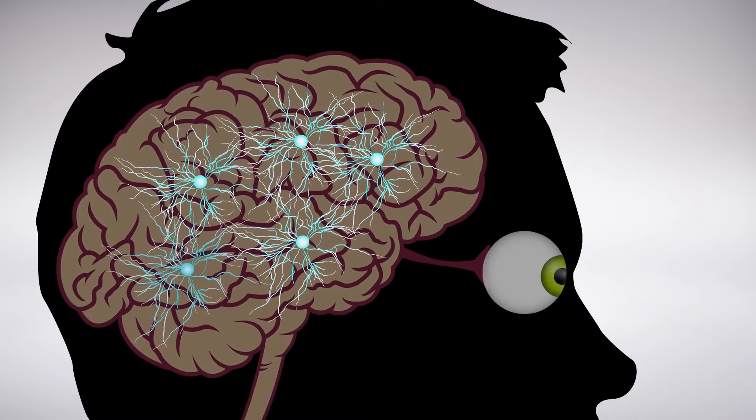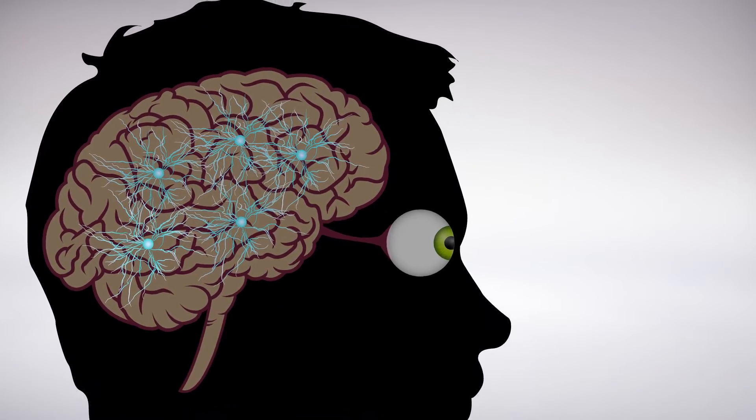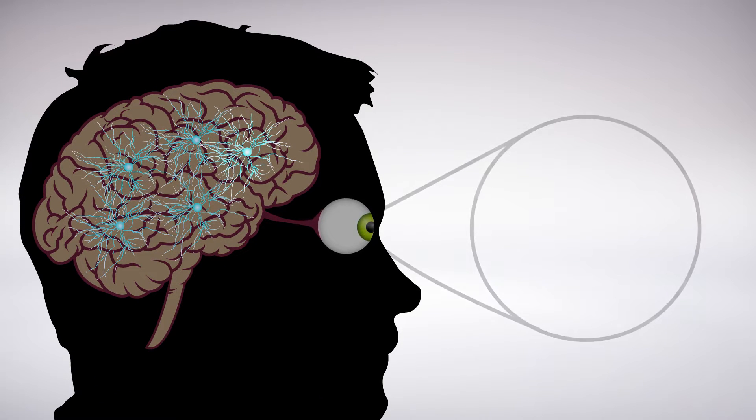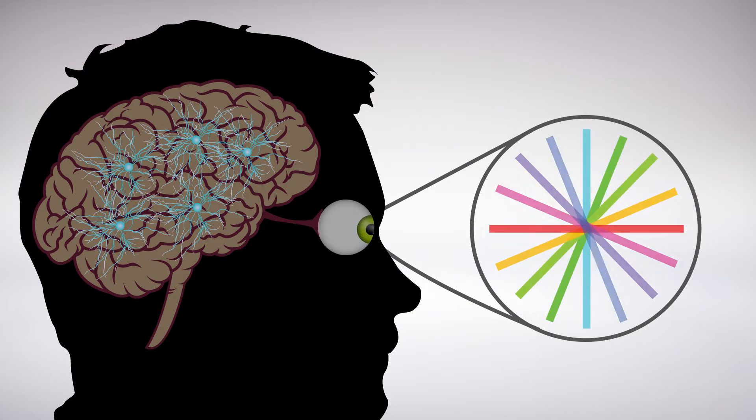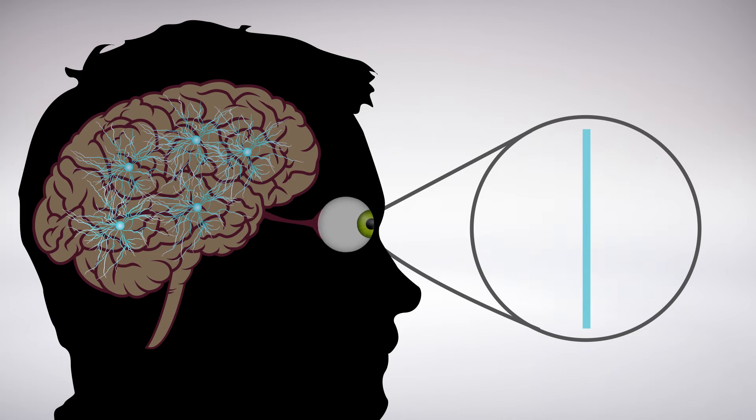Based on the information they receive from the retina, individual neurons in the brain's cerebral cortex respond to stimuli oriented at particular angles. Some prefer vertical edges, some prefer horizontal edges, and others prefer angles in between.